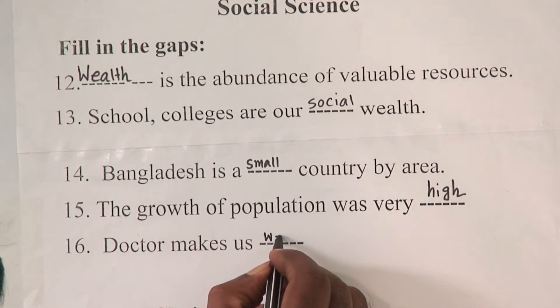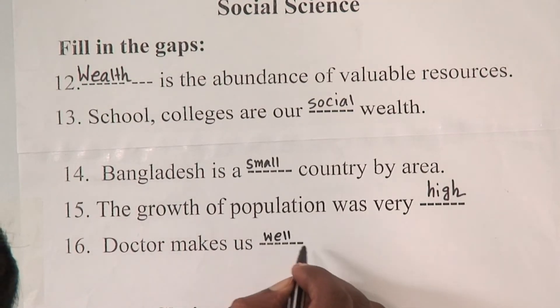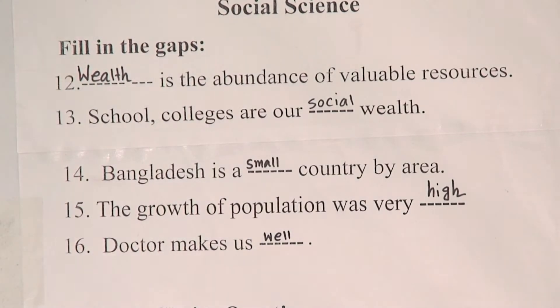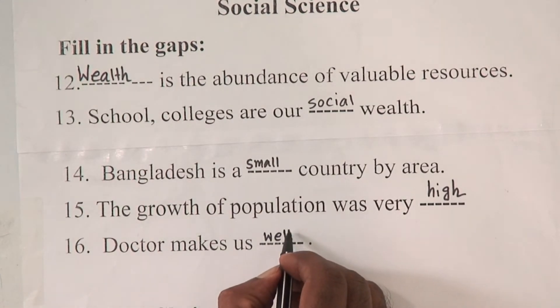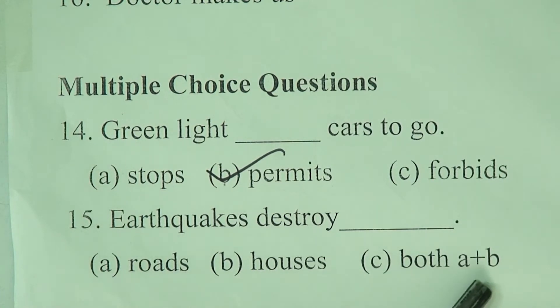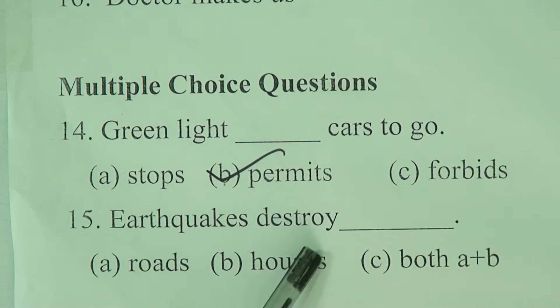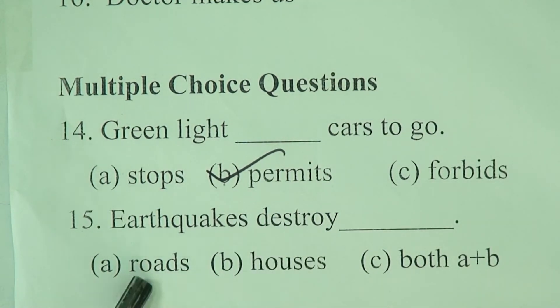The last fill in the blank: 'A doctor makes us dash.' The answer is well — W-E-double L. So dear students, we have finished our five fill in the blanks. Now we have multiple choice questions, or MCQ. MCQ stands for multiple choice questions.